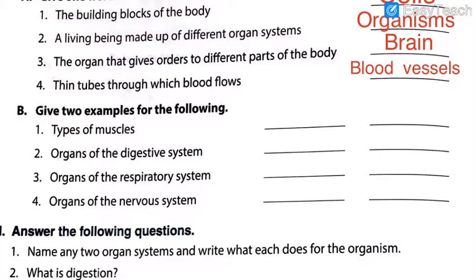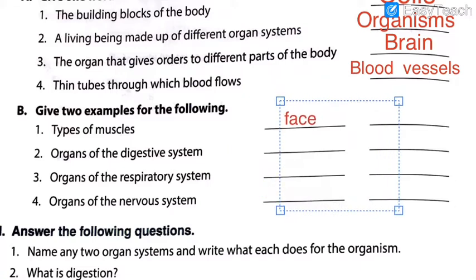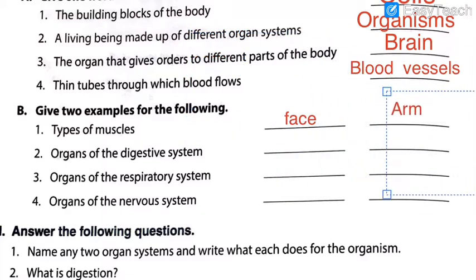On page number 89, there are 3 types of muscles, but you have to write only 2. The 3 types are face muscle, arm muscle, and leg muscle — write any 2 of your choice. I will write face and arm. Types of muscles: face muscles and arm muscles. It is not necessary that you write the exact 2 examples I have mentioned — you can write examples of your choice, but they should be valid and correct.